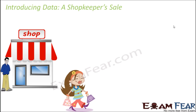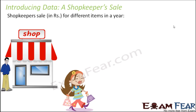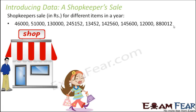Let's look at another scenario — a shopkeeper. For a particular shopkeeper, his sale for different items in a year: he sells books, pens, pencils, notebooks, rulers, color books, etc. For all these different items, his sale in rupees was given — for pens it was ₹46,000, for erasers ₹51,000, for notebooks ₹1,30,000, and so on. The sale for each item for that particular year is listed.